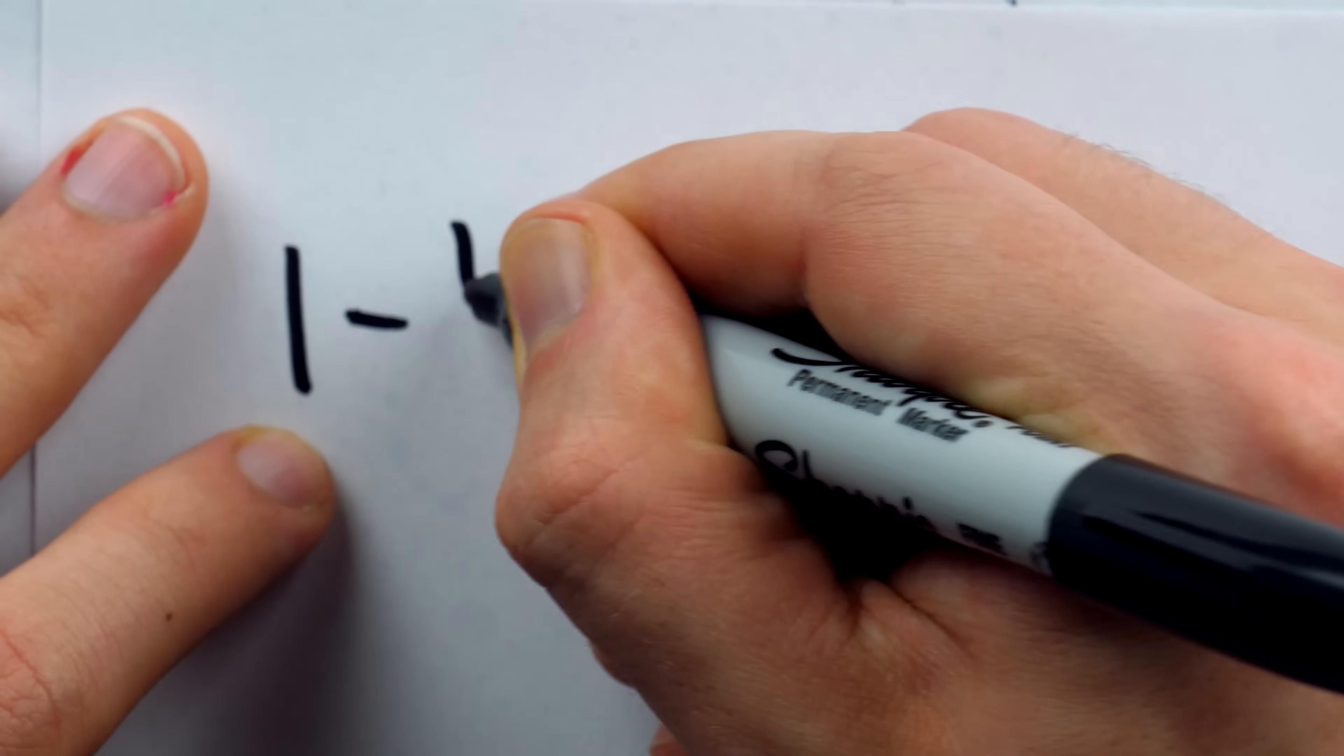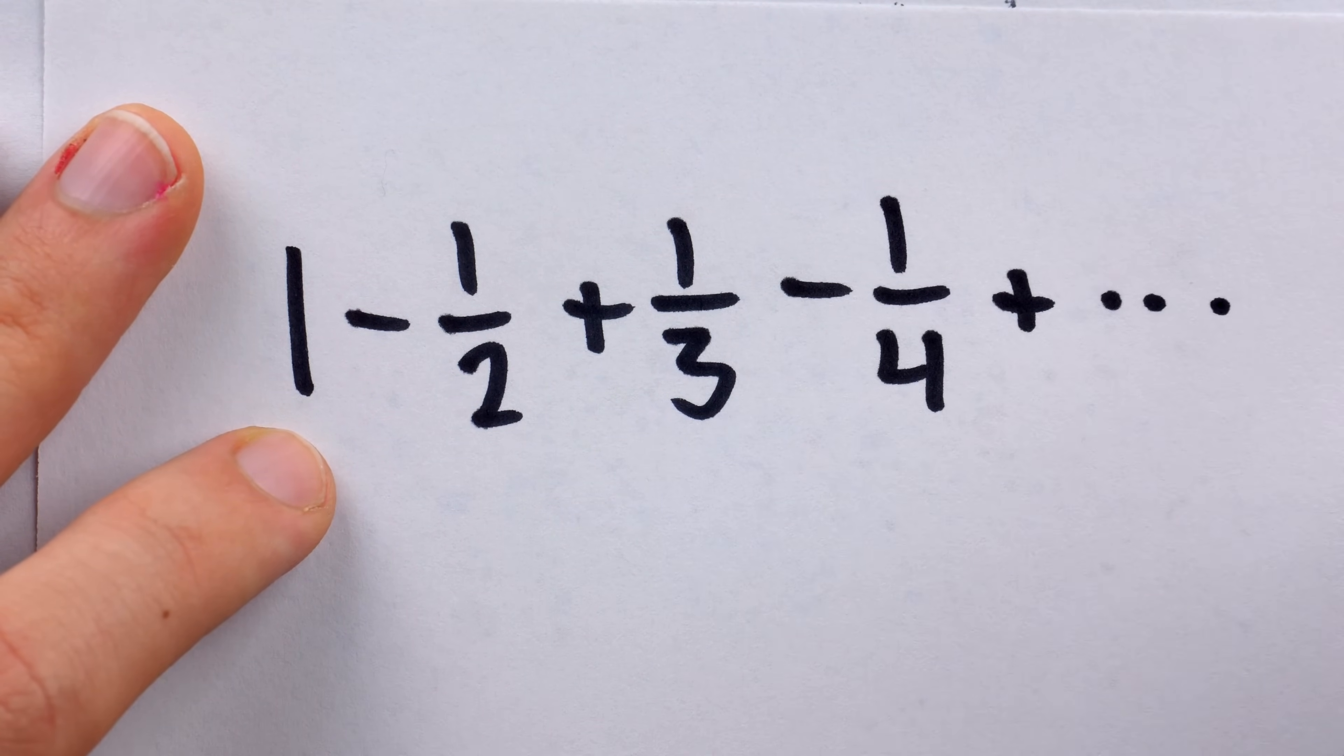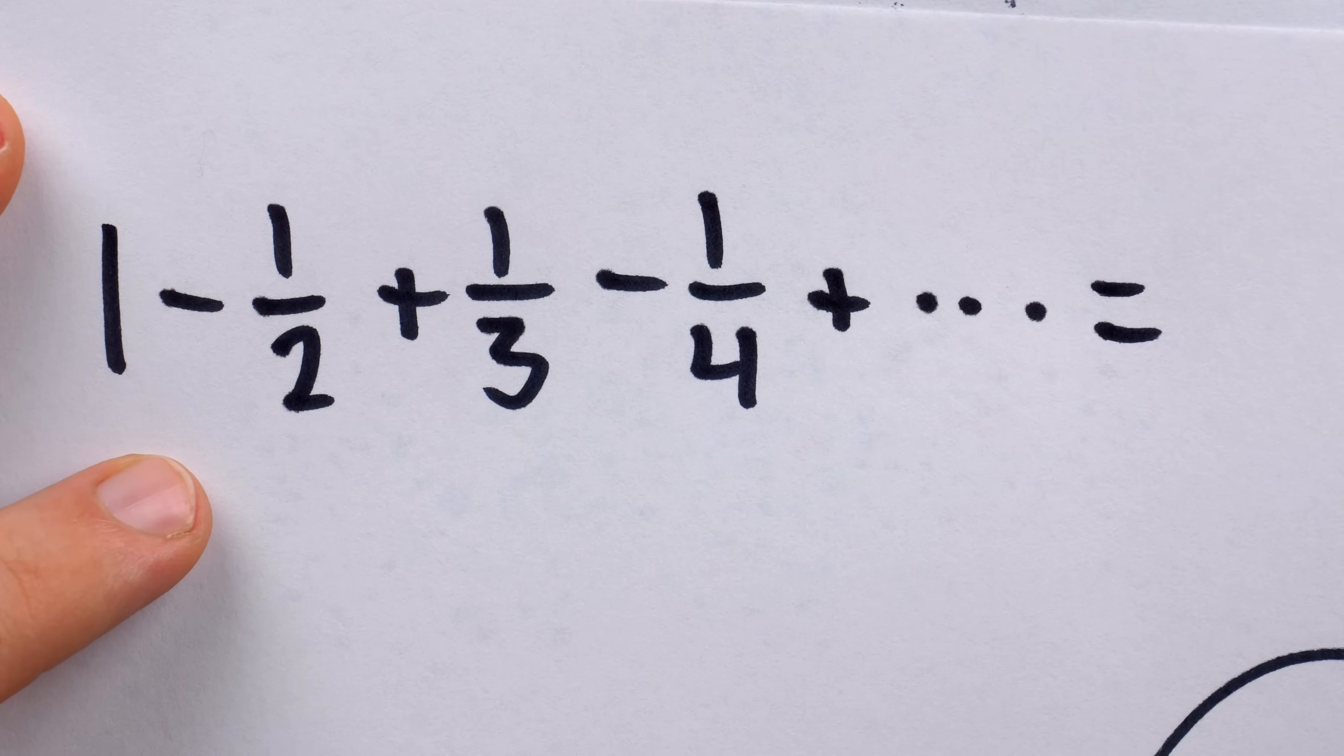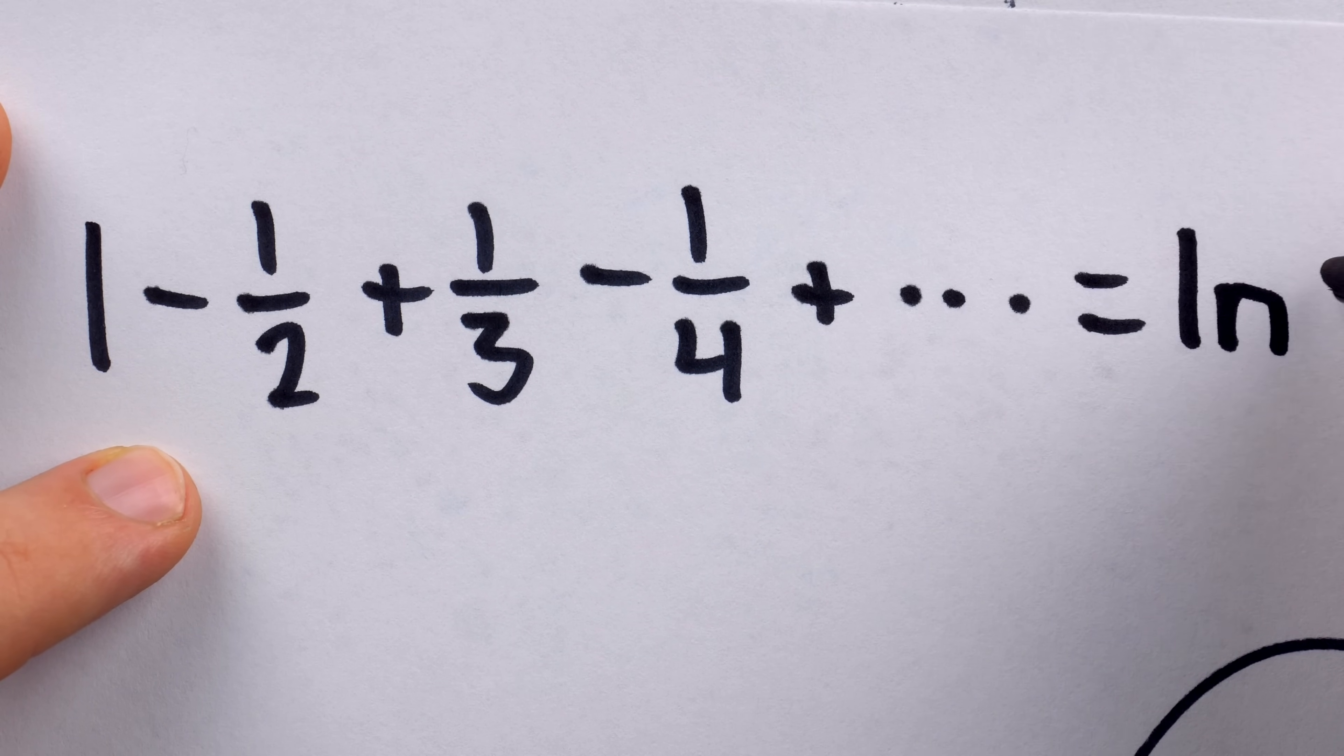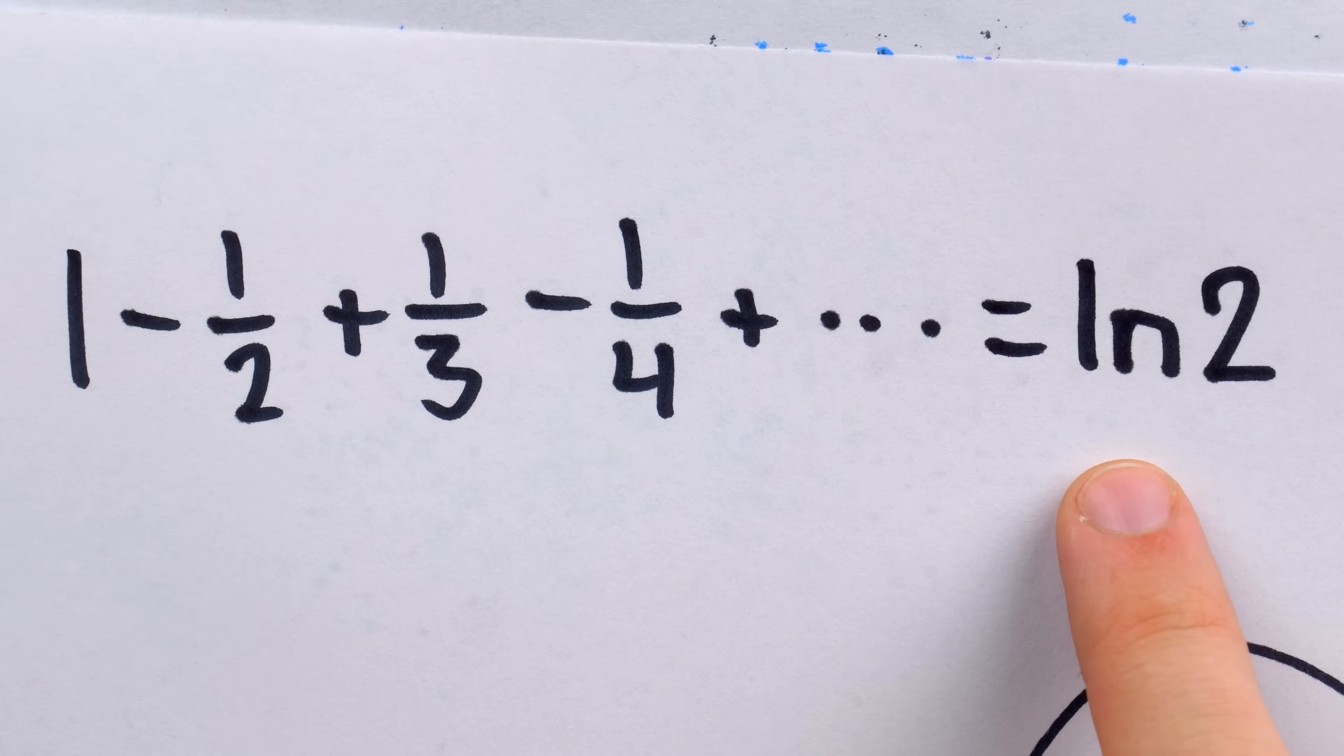But if we take this harmonic series and turn it into an alternating sum, like so, 1 minus a half plus a third minus a fourth and so on, this series does converge. It does approach one specific value. In fact, the further you go in the series, the closer the value gets to the natural log of 2. So divisibility rules quickly lead into a lot of other interesting mathematics and I look forward to talking more about this stuff in the future.